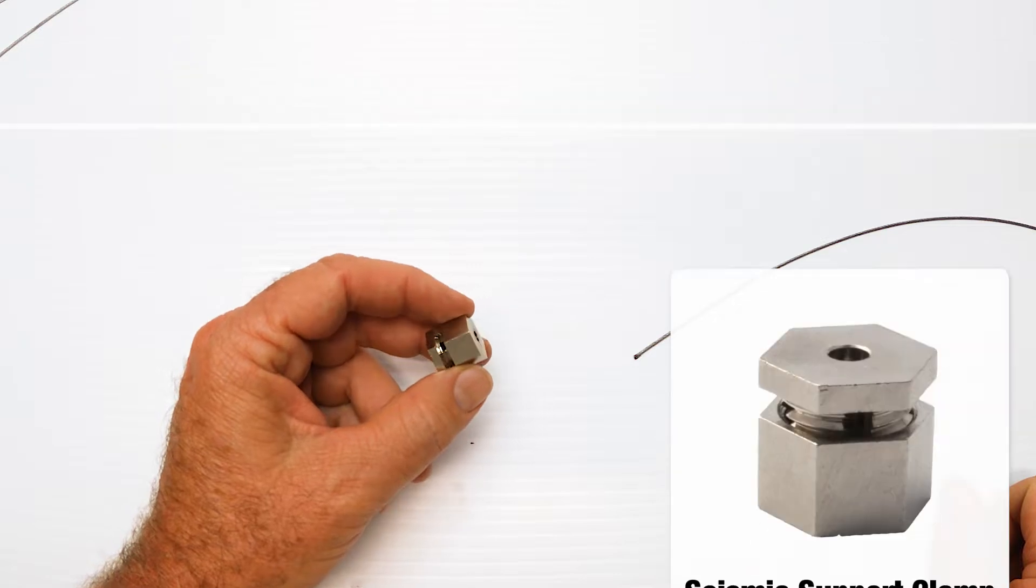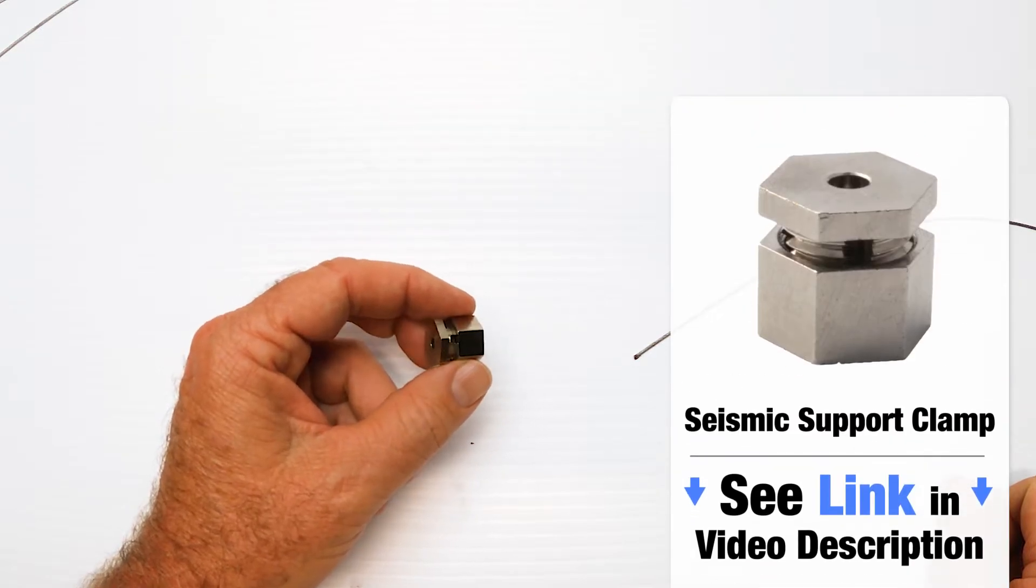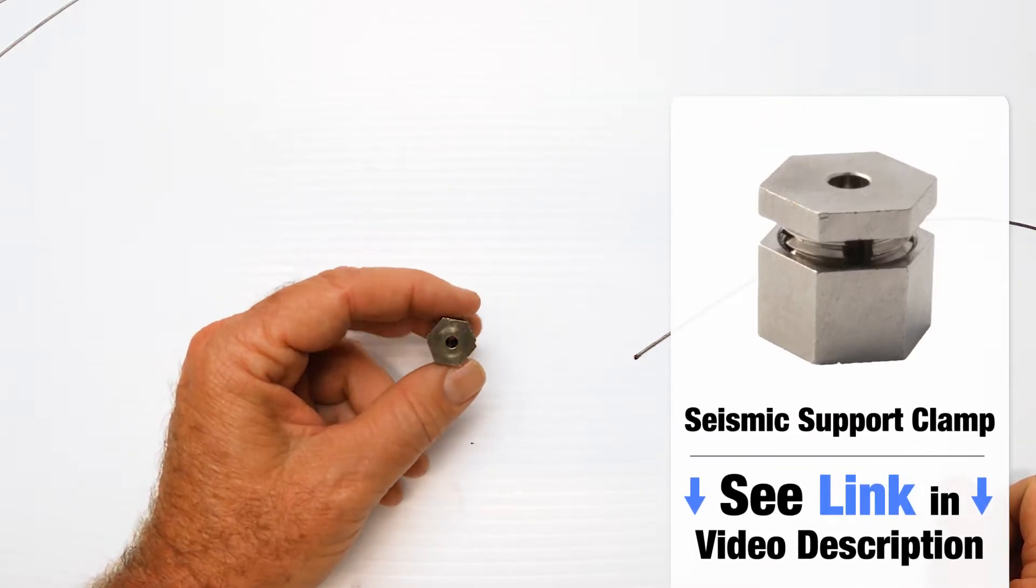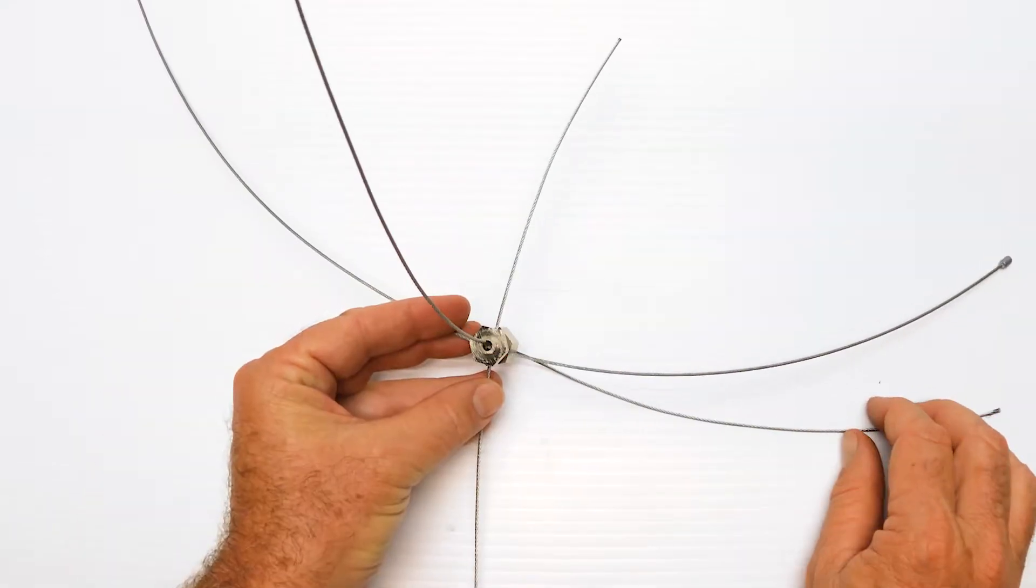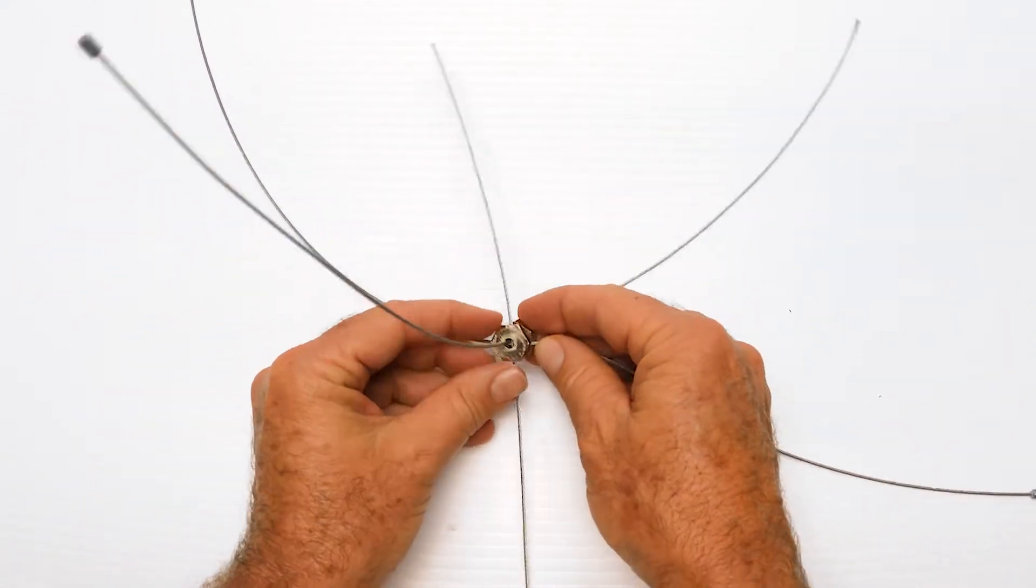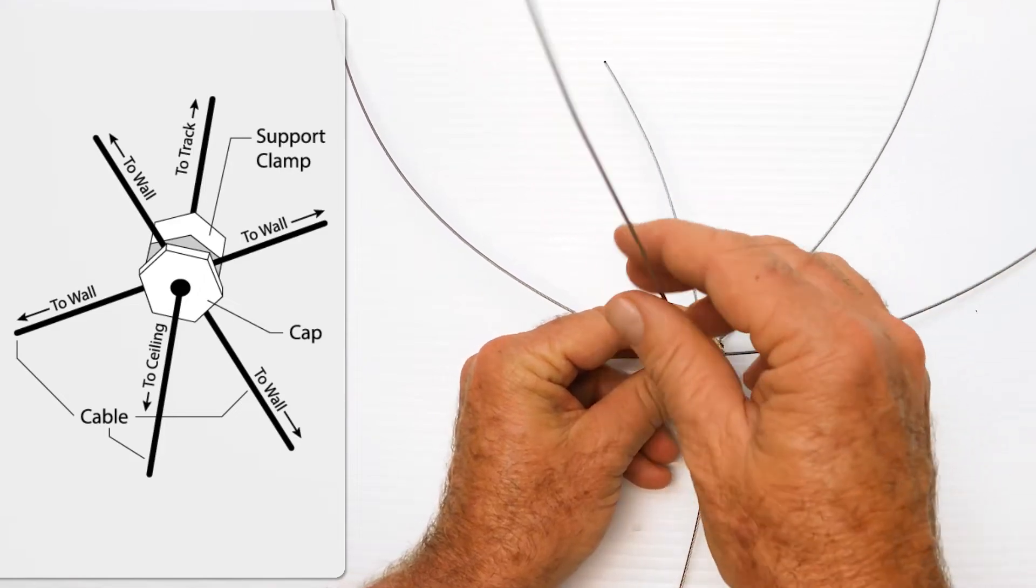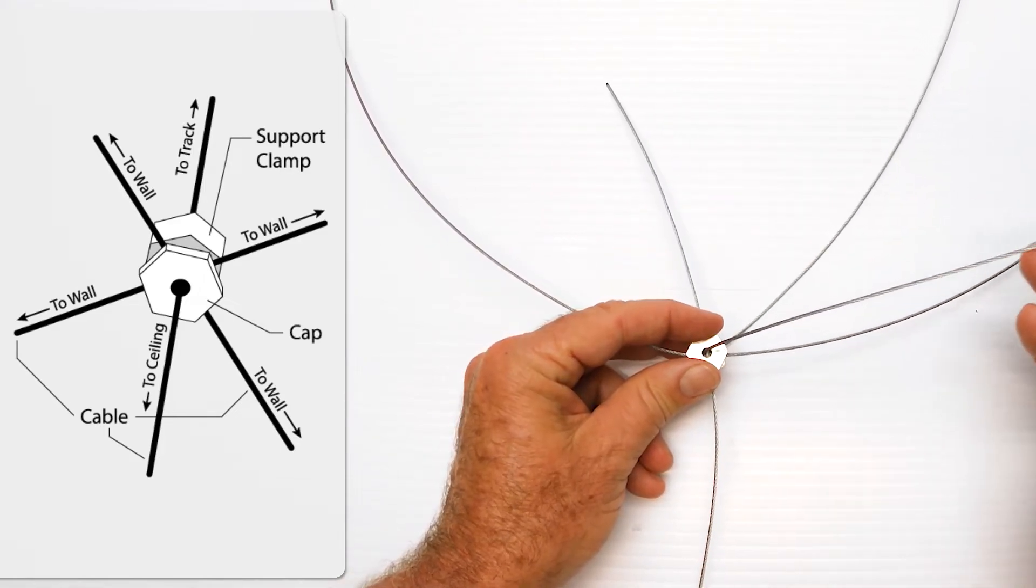This is a really short video on one of the connectors we use for seismic support for track lighting. It's really simple and what it allows is it allows to connect your track to the ceiling and that's what this wire coming straight out of it's for.